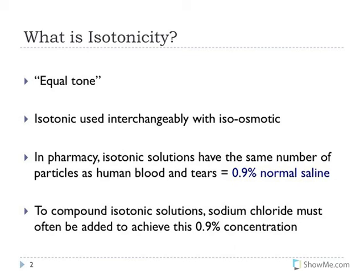0.9% normal saline is an isotonic solution with human blood and tears. When compounding drug solutions, we want to get their isotonicity equivalent to 0.9% normal saline, and that's often done by adding sodium chloride. However, the other drugs in the compound are also particles, so we have to make adjustments for those — we can't simply use only sodium chloride. That's why these are called sodium chloride equivalent equations.